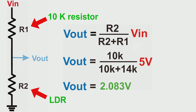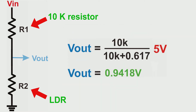For example, if we use a fixed R1 of 10k and R2 is the LDR which is a variable resistor, we can take the voltage output from the middle between R1 and R2. If the LDR is 14k, this is the output voltage. If the LDR is 617 ohms, here is the voltage output. We can see that when resistance increases, voltage output increases too — meaning when light intensity increases, voltage decreases. The brighter the light, the less voltage output.